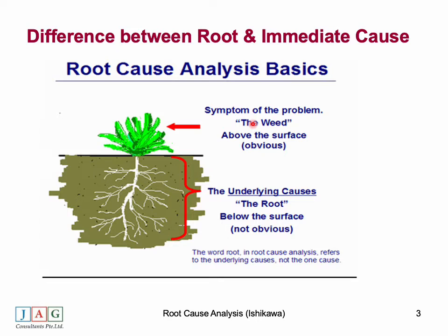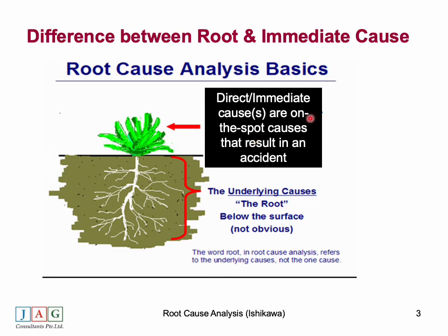More often we term the immediate cause as the root cause, and thus the action to prevent recurrence addresses only the immediate cause while the underlying root cause remains uncovered. The immediate cause is the symptom — such as fire in the galley caused by smoking. The fire is put out using a fire extinguisher, followed by training personnel or warning staff not to smoke. Often human error is concluded as the root cause, but in fact human error is the start point for assessing root cause, not the end of the root cause analysis process.